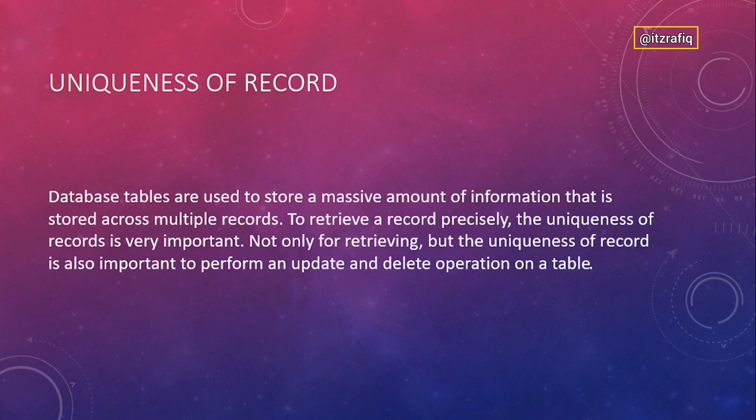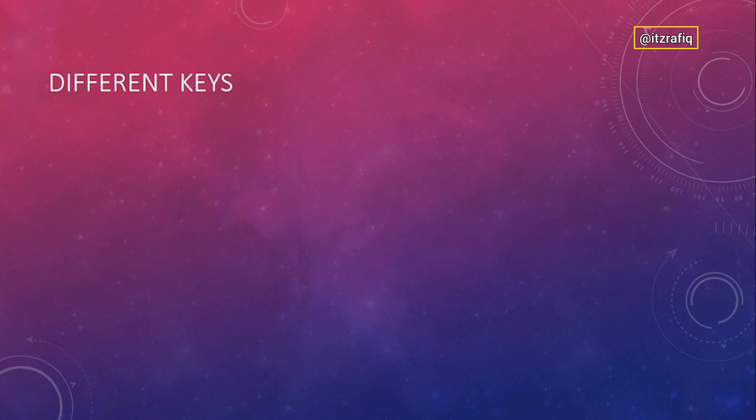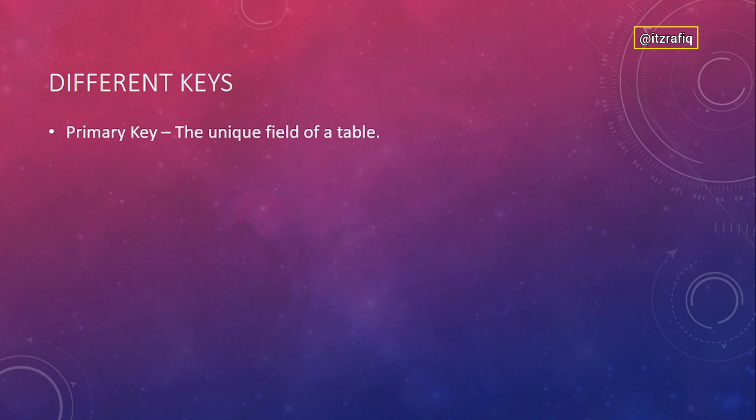There are different types of keys in a database. The first is the Primary Key — this is the most unique field of a table. We set it as the primary key, and on this field we cannot insert duplicate values. The values of a primary key should always be unique.